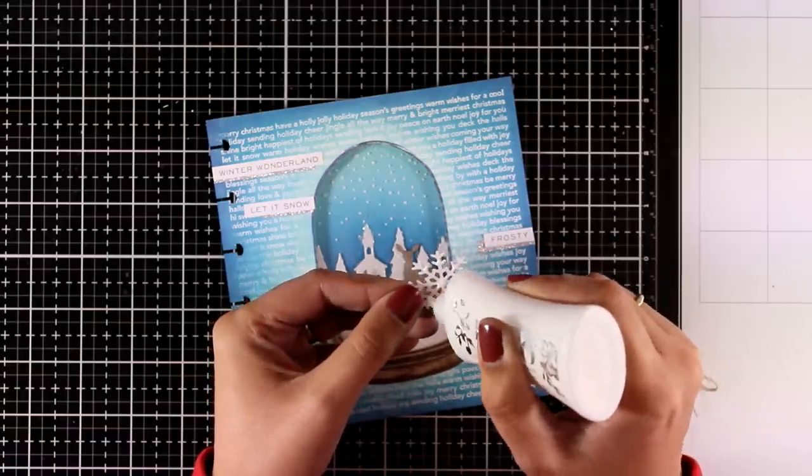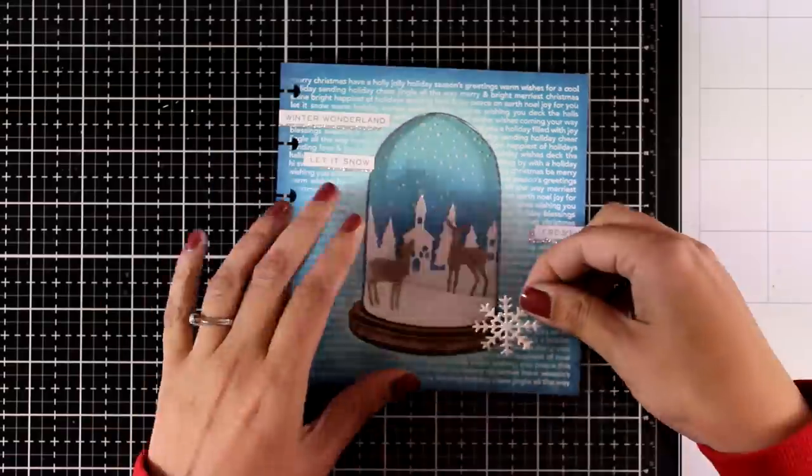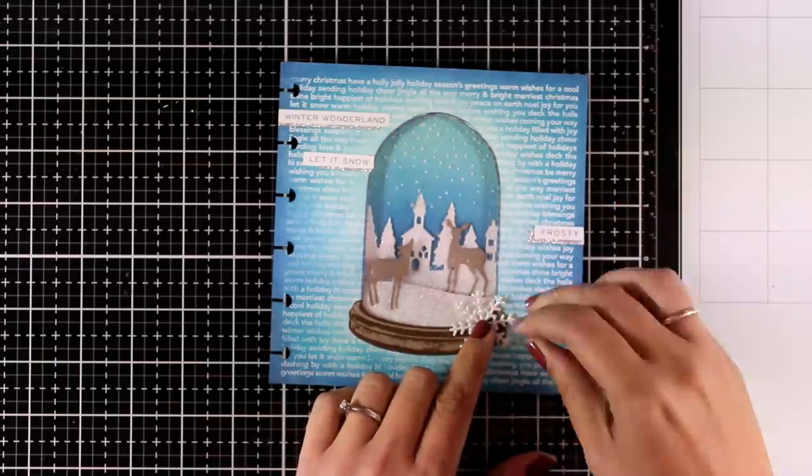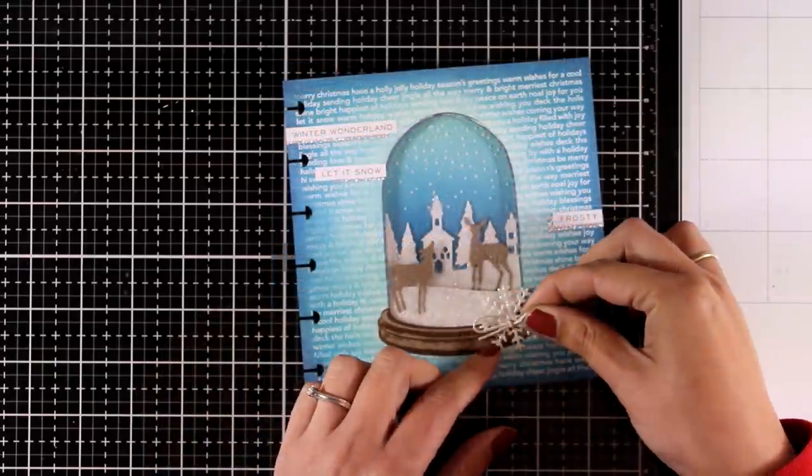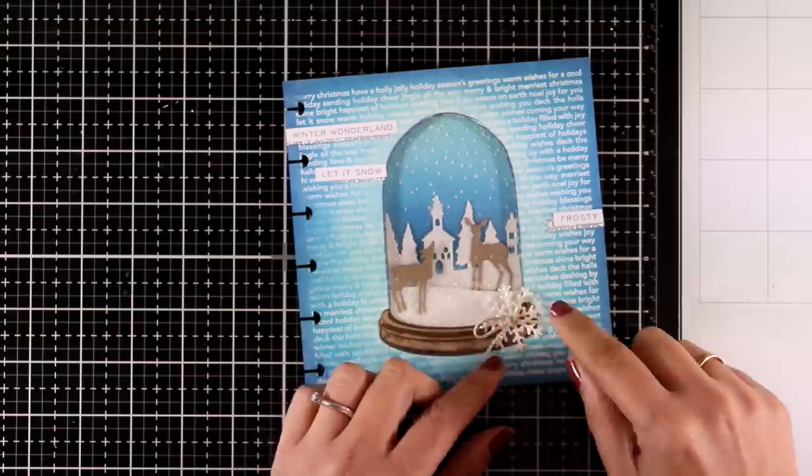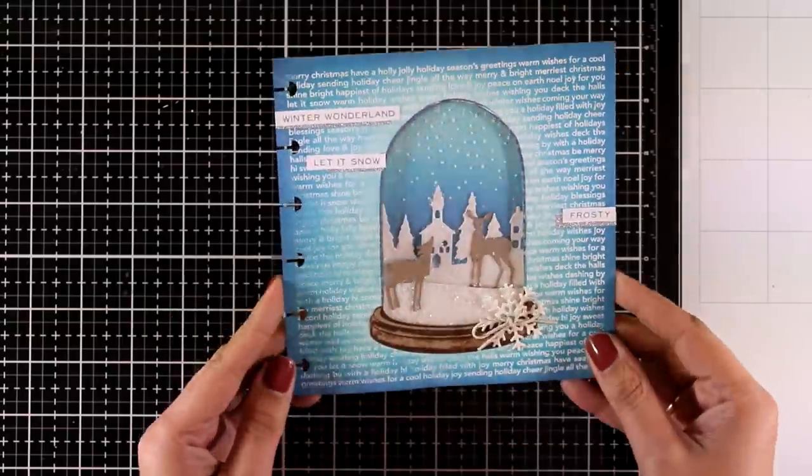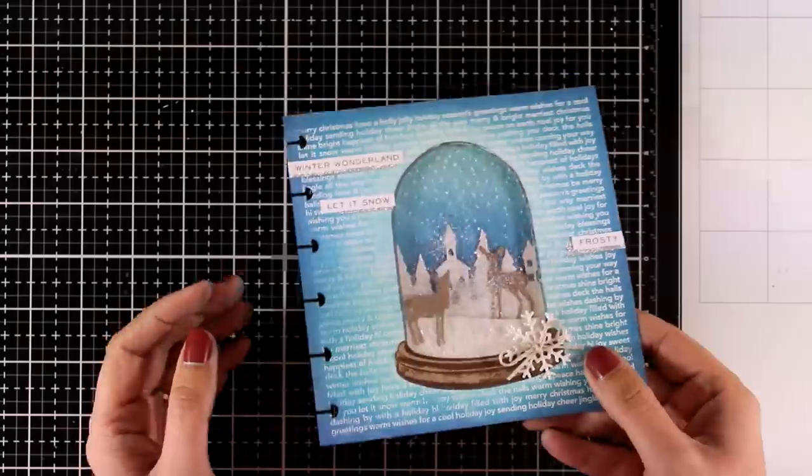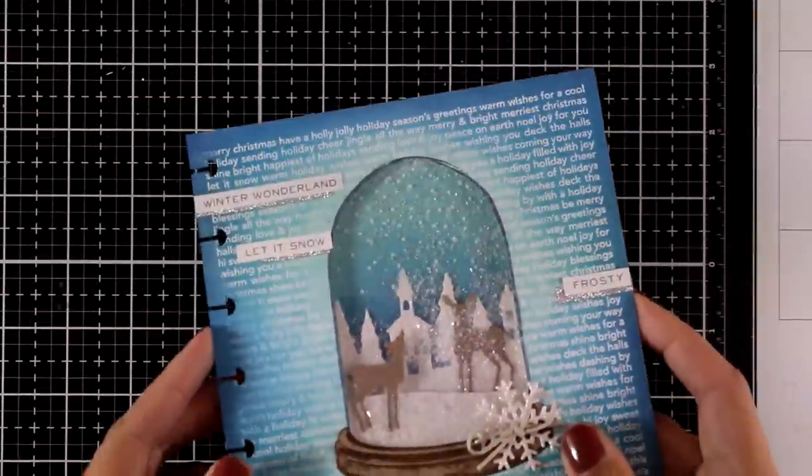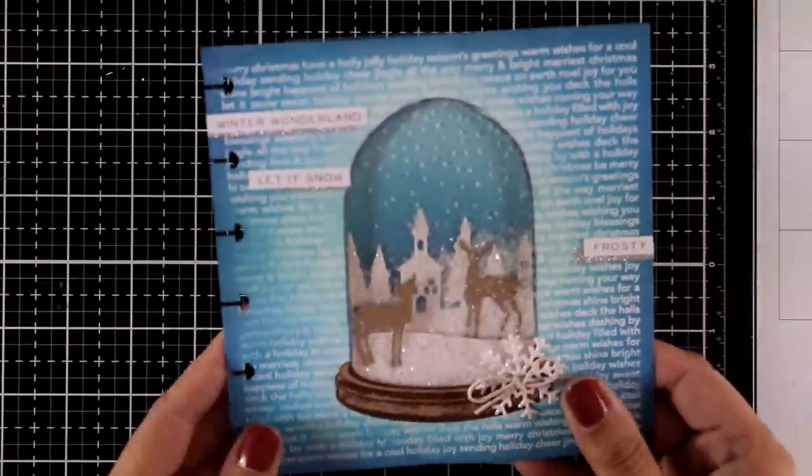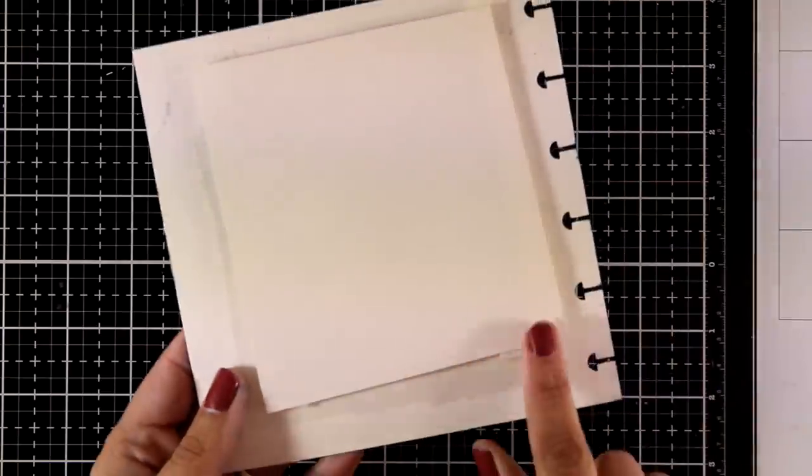One of them says Winter Wonderland, the other says Let It Snow and finally one that says Frosty. Now I have also cut out a little snowflake using a die that I had in my stash out of the white glitter cardstock and finished it off with a little bow. Now my shaker page is ready. Let's look at the back and see what we can do about it.